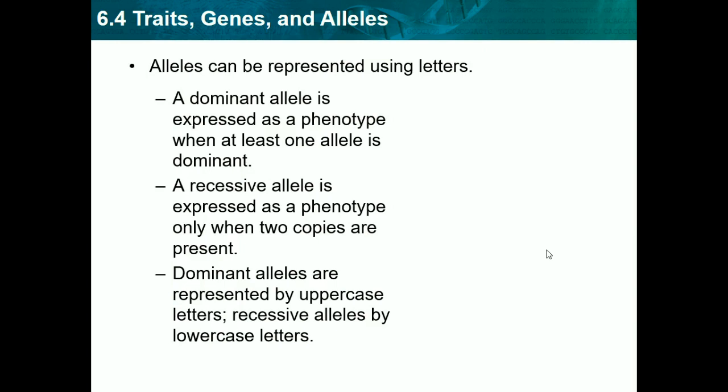Let's use B for blonde. You would have two lowercase b's to have blonde hair. If you have a capital B, and let's say black hair is the other color, capital B would make you have black hair — you just have to have one capital B because it automatically overpowers the recessive. So capital B, capital B would be black hair, and capital B, lowercase b would also be black hair.